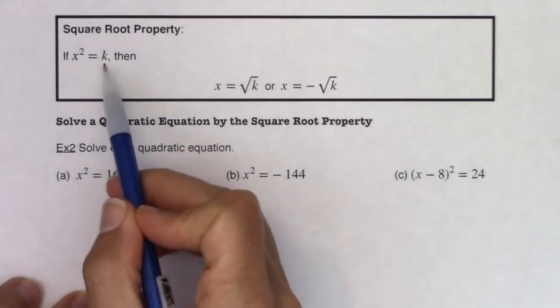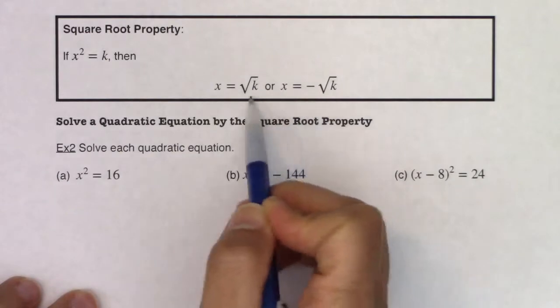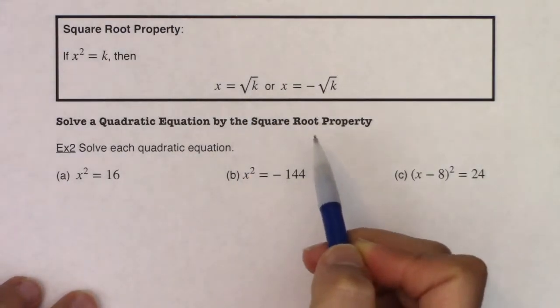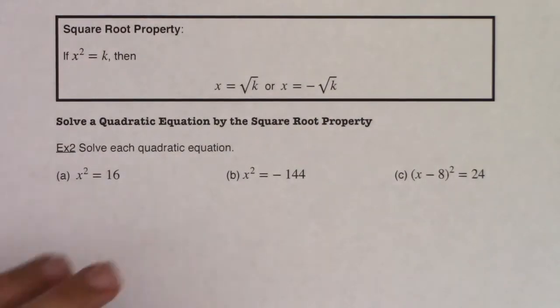So when x squared is just equal to k, then you have two square roots. You could either get the positive square root of k or the negative square root of k. And if that seems a little off to you, let's just take a look at this example 2a.